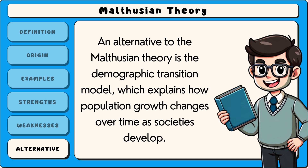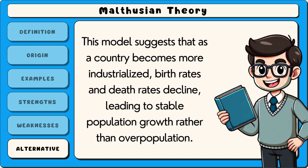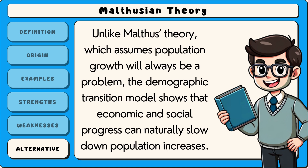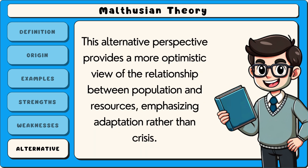An alternative to the Malthusian theory is the demographic transition model, which explains how population growth changes over time as societies develop. This model suggests that as a country becomes more industrialised, birth rates and death rates decline, leading to stable population growth rather than overpopulation. Unlike Malthusian theory, which assumes population growth will always be a problem, the demographic transition model shows that economic and social progress can naturally slow down population increases. This alternative perspective provides a more optimistic view of the relationship between population and resources, emphasising adaptation rather than crisis.